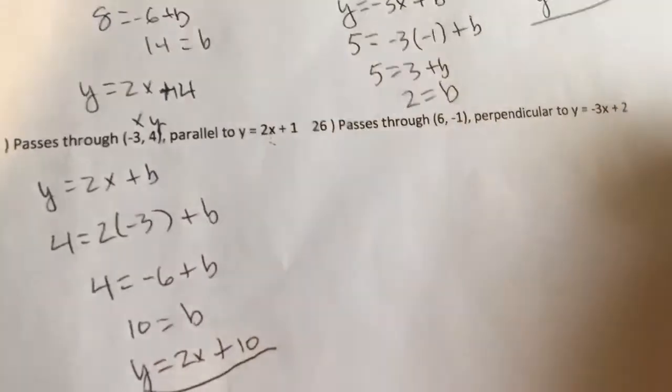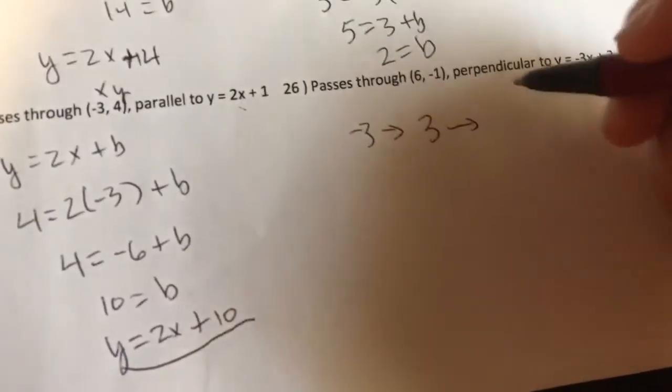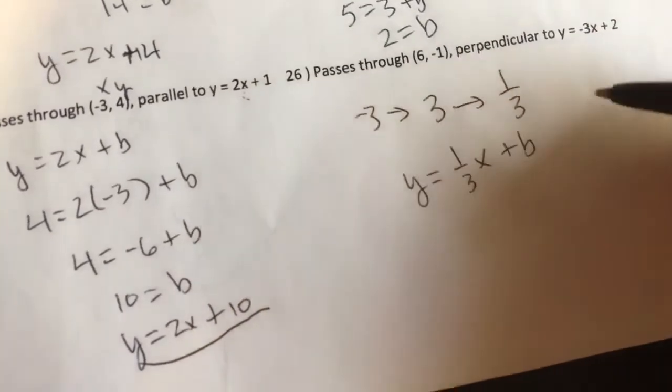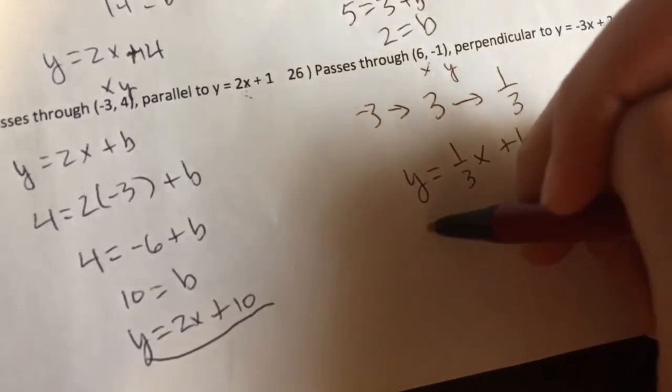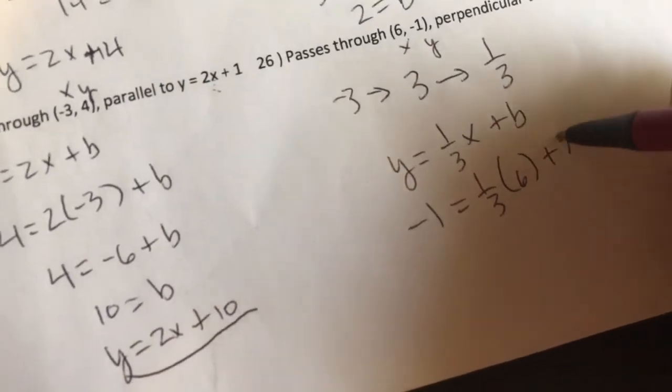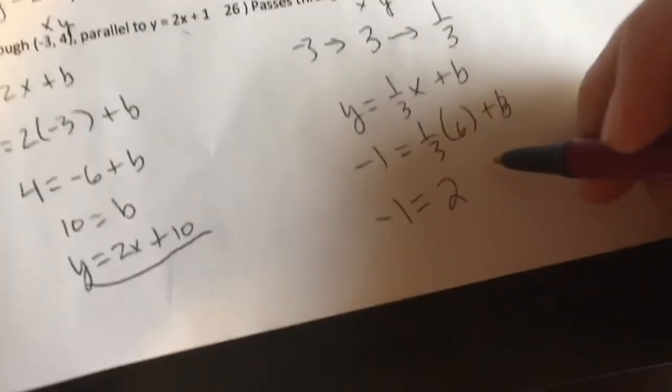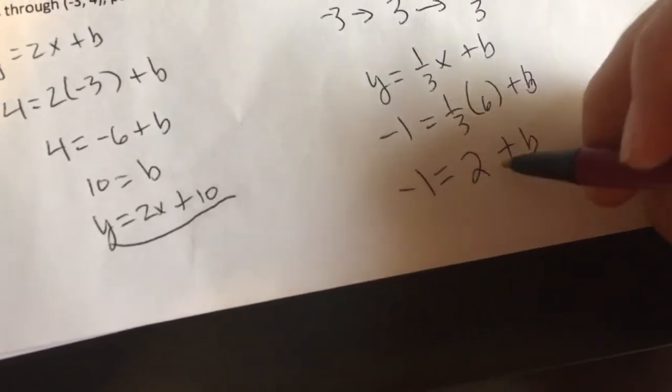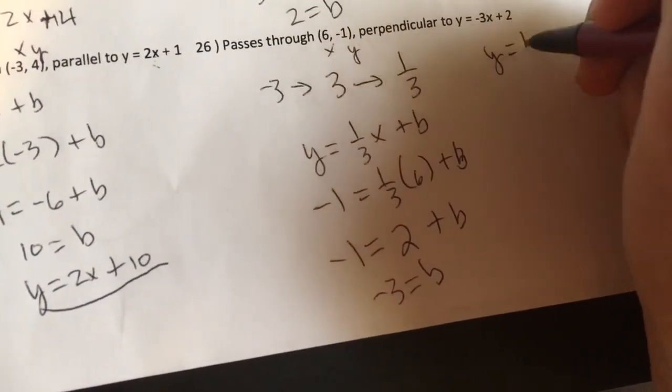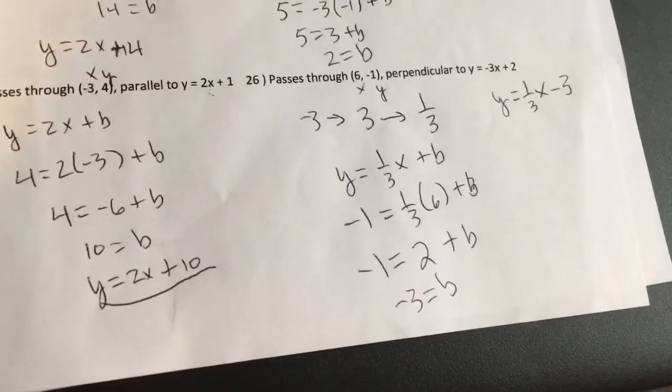And lastly, guys, perpendicular lines have opposite reciprocal slopes. So if I start with a slope of negative 3, the opposite of that is a positive 3, and the reciprocal of that is a one-third. So I have Y equals one-third X plus B. I have an X and a Y that it goes through. Negative 1 is equal to one-third of 6. Hopefully, we all know that that is 2 plus B. So running out of real estate here. Brought to you by Zillow.com. All right, subtract 2 from both sides. Negative 3 is equal to B. Y is equal to one-third X minus 3. All right, folks, this is your quiz review video, and this is 90.90 Quadratic. Signing out.